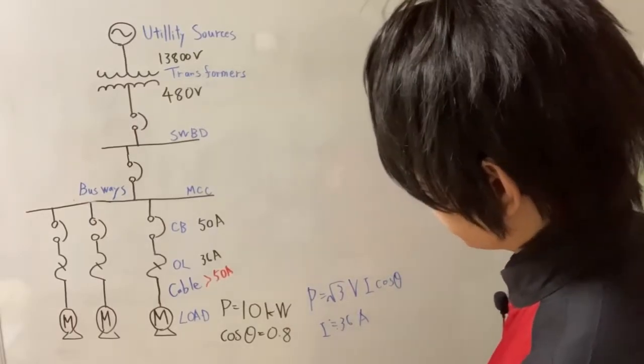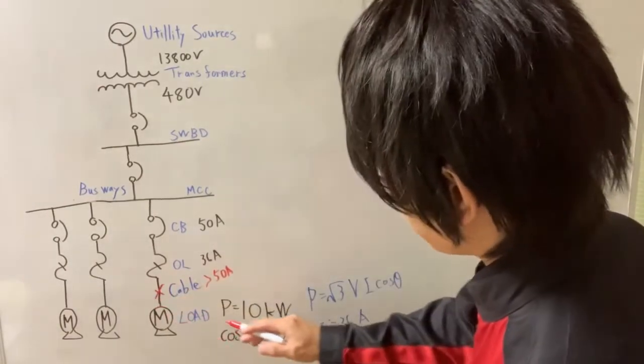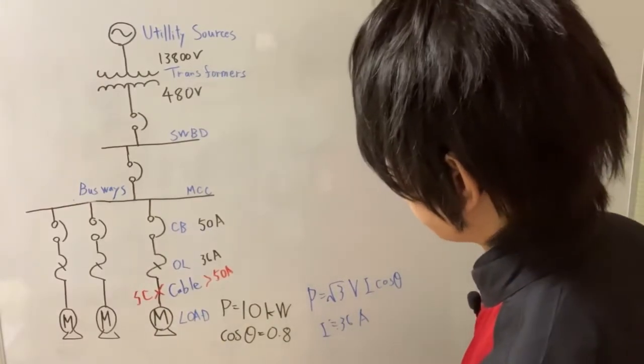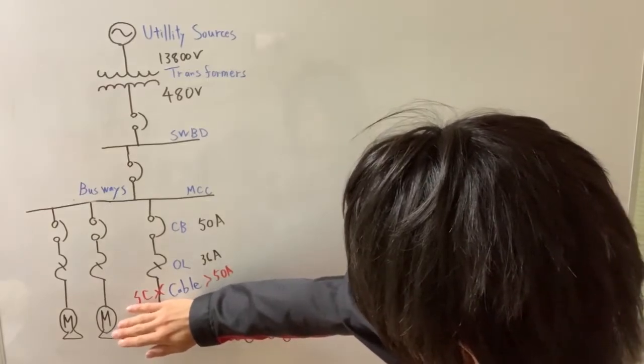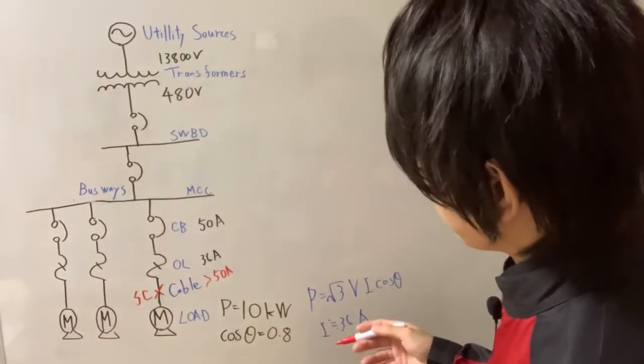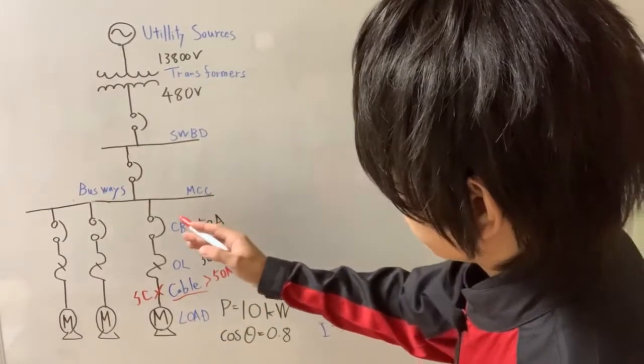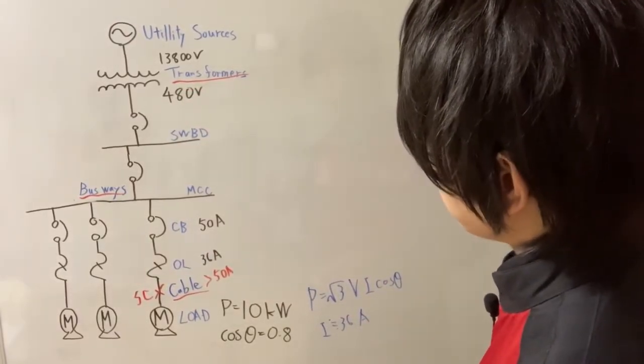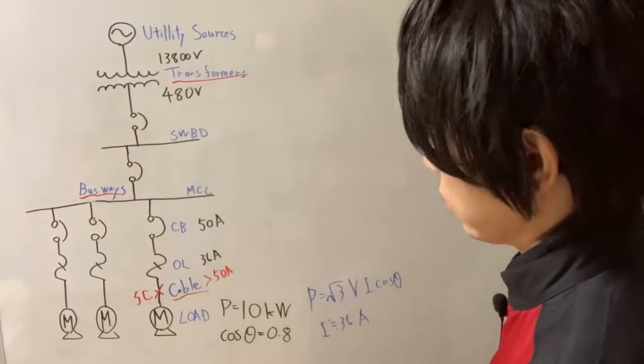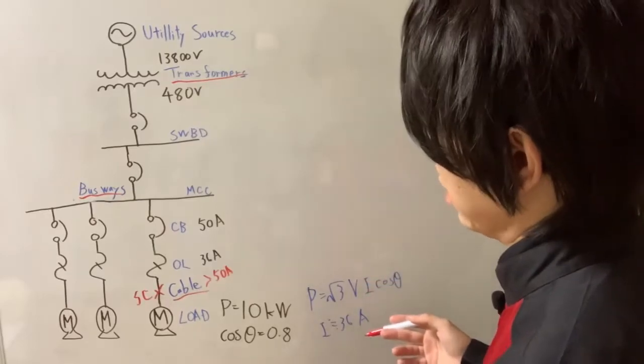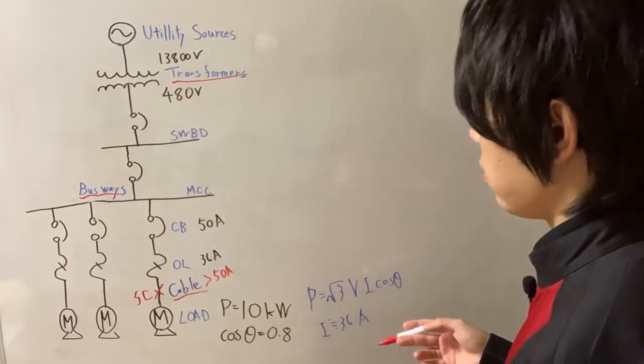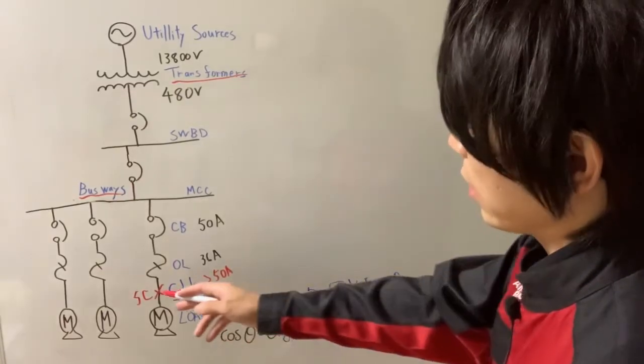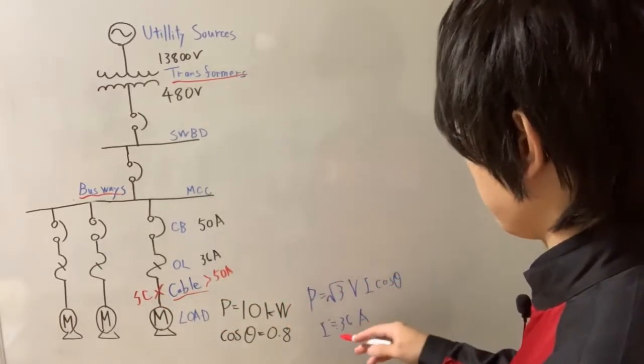So if short circuit occurs here, what will happen? You know, there are no load anymore. There are only impedances like cable or busway, transformer and so on. And the impedance of these devices is quite small because they are conducting devices. They are designed to not disturb the flow of the current. And that is why short circuit current is much greater than the normal load current.